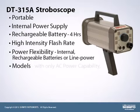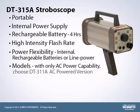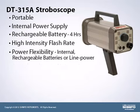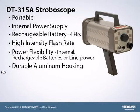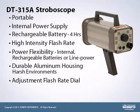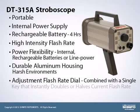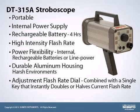For models with only AC power capability, choose the DT-311A AC powered version. This family of stroboscopes is constructed of a durable aluminum housing which is essential in harsh plant environments. The easy adjustment flash rate dial, combined with a single key that instantly doubles or halves the current flash rate, allows users to quickly get to the speed they desire. The phase shift feature is provided to adjust the angle so that the reciprocating or rotating machinery can be viewed clearly in forward or reverse motion.